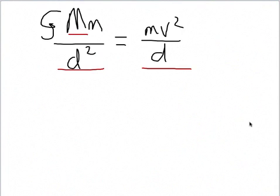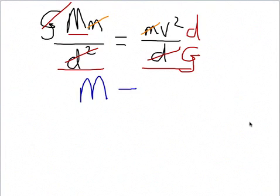Now, notice we can cancel the small m's. The mass of the star does not matter. And let's rearrange. So multiply both sides by d squared. Put the d on the top here, and divide both sides by G. So we know that the mass of the galaxy must be v squared d over G.